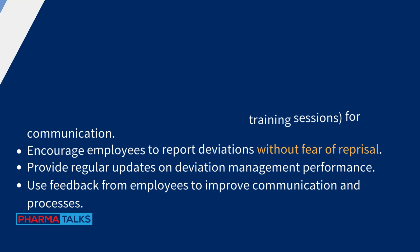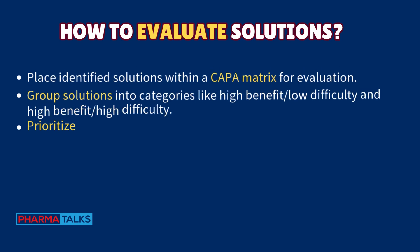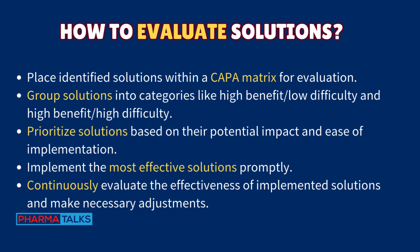To evaluate solutions, place identified solutions within a CAPA matrix. Group solutions into categories such as high benefit/low difficulty and high benefit/high difficulty. Prioritize solutions based on their potential impact and ease of implementation. Implement the most effective solutions promptly, and continuously evaluate their effectiveness and make necessary adjustments.